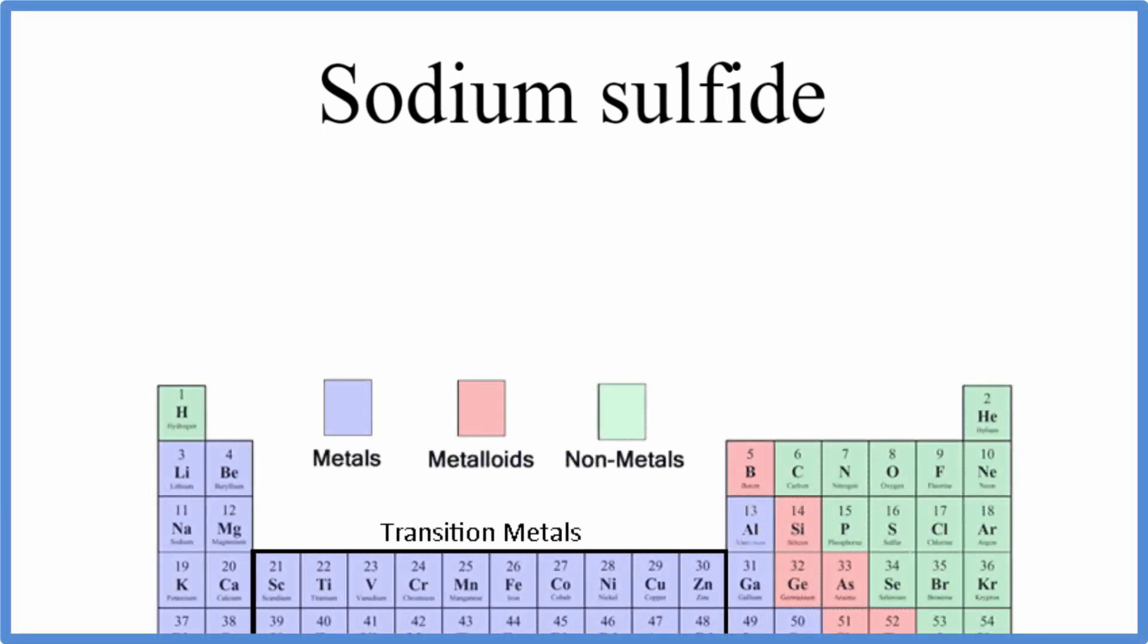For sodium sulfide, to write the formula, we look on the periodic table. We see sodium, that's Na, and sulfide, we'll look for sulfur, which is S. So we have NaS.